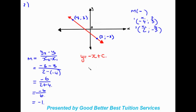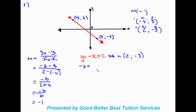Now our next step is to substitute in one of the points. We'll substitute in (2, -3) — it doesn't matter which point you use as long as it's one of the provided points. So y is negative three, equal to minus two plus c.